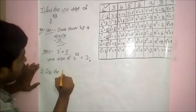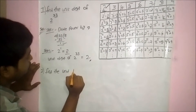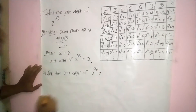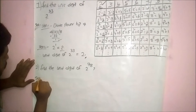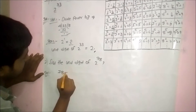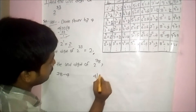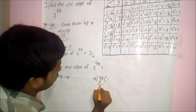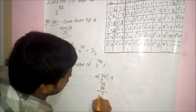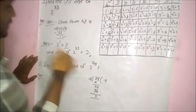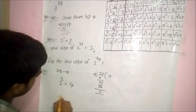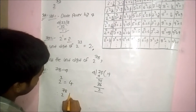Second problem: find the unit digit of 2 power 78. Divide 78 by 4: remainder is 2. Replace the power with the remainder: 2 power 2 equals 4. Therefore the unit digit of 2 power 78 is 4.